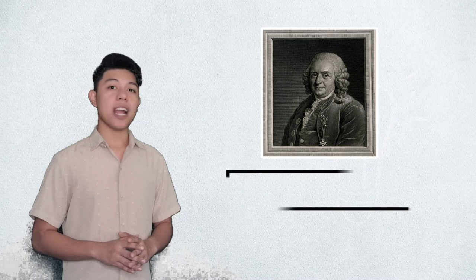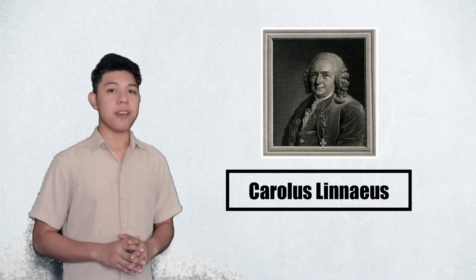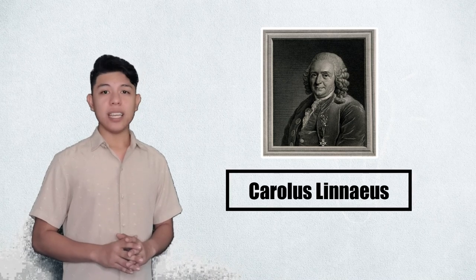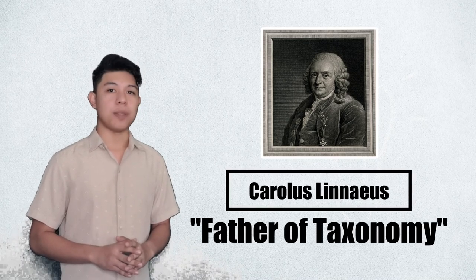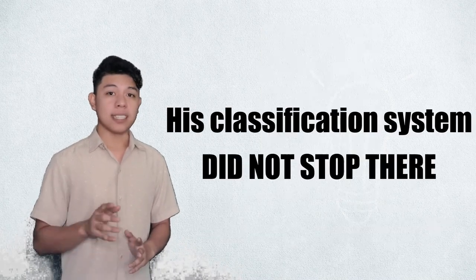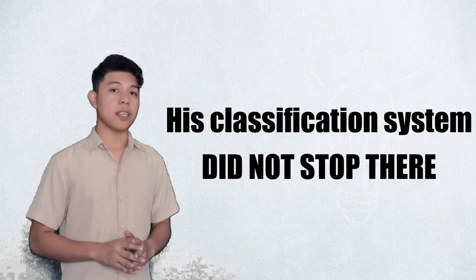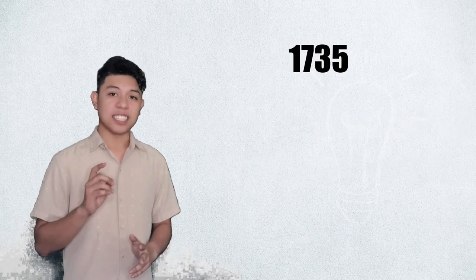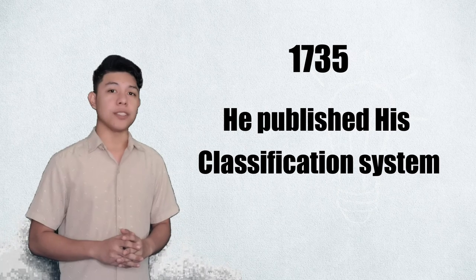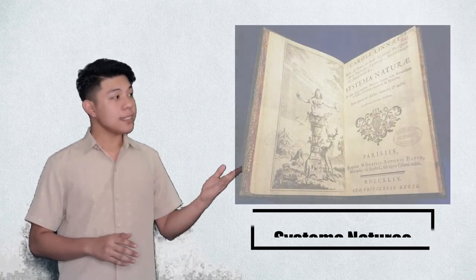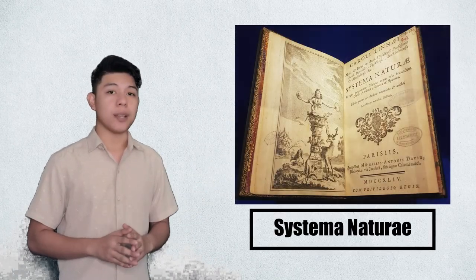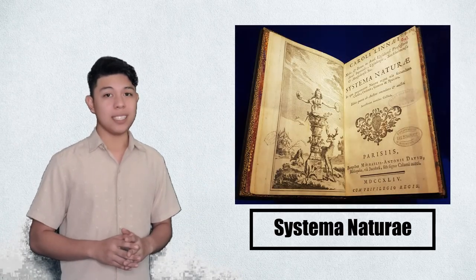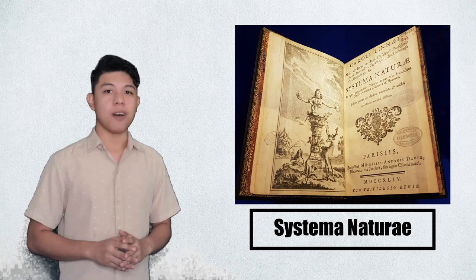Because of Carolus Linnaeus' invention, he is now known as the father of taxonomy. His classification system did not stop there — in 1735, he published his classification system in a work called Systema Naturae, which means system of nature.